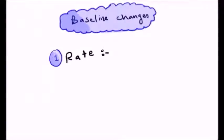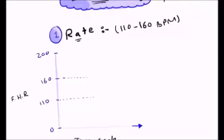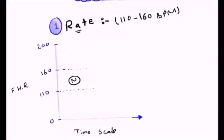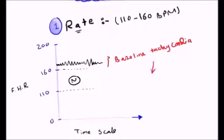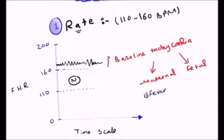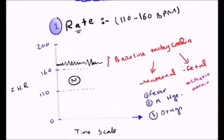Starting with baseline changes: the normal fetal heart rate is 110 to 160 bpm. If the fetal heart rate is above 160, we call this baseline tachycardia. The causes can be maternal or fetal. Maternal causes include all causes of hyperdynamic circulation such as fever, maternal hemorrhage, and drugs. Fetal causes include chorioamnionitis. There are also other causes like maternal hyperthyroidism.